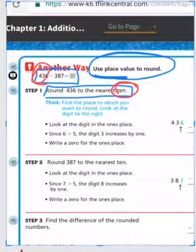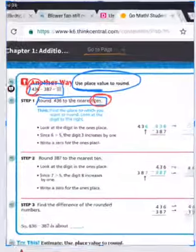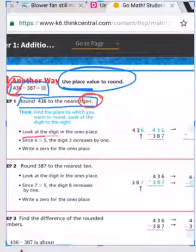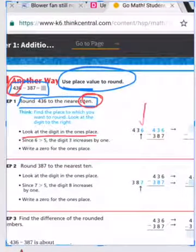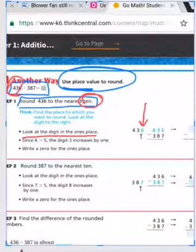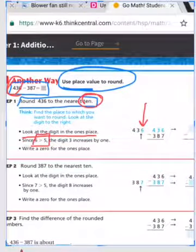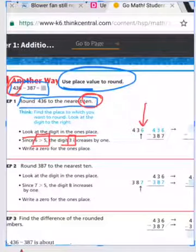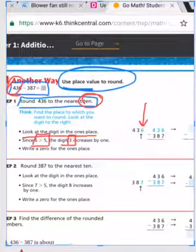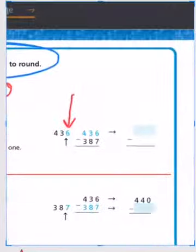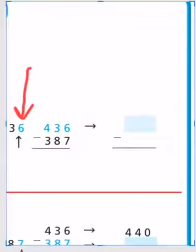436, we're going to round that first because that's our first number in the subtraction problem. Always make sure you're reading the directions closely so you know what number to round to. Now 436, we're going to look at the digit in the ones place, and that is 6 ones. And 6 is greater than 5, so our tens column, which happens to have the digit 3, goes up by 1. And so when we write that then, 436 rounded to the nearest 10 is 440.